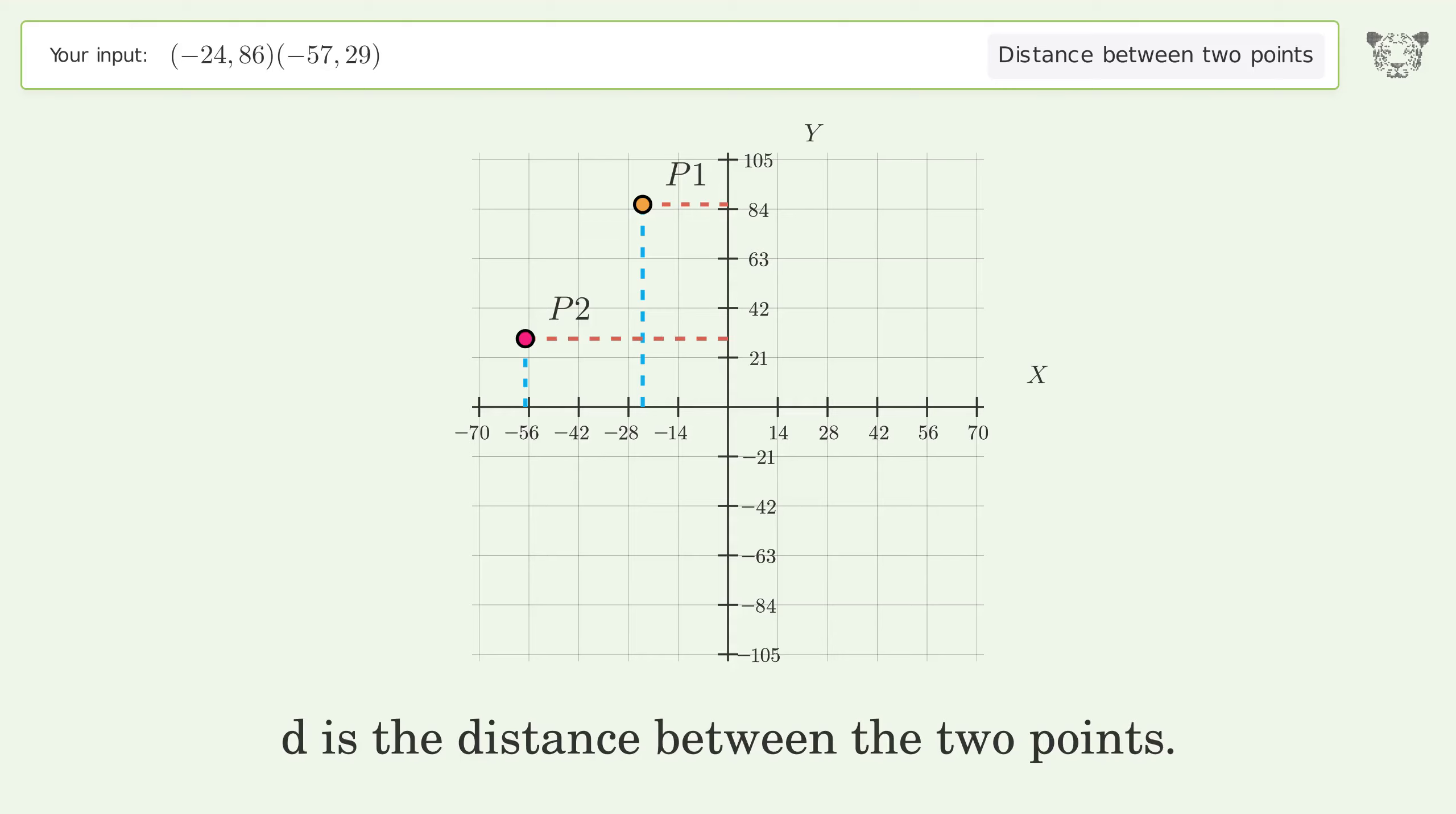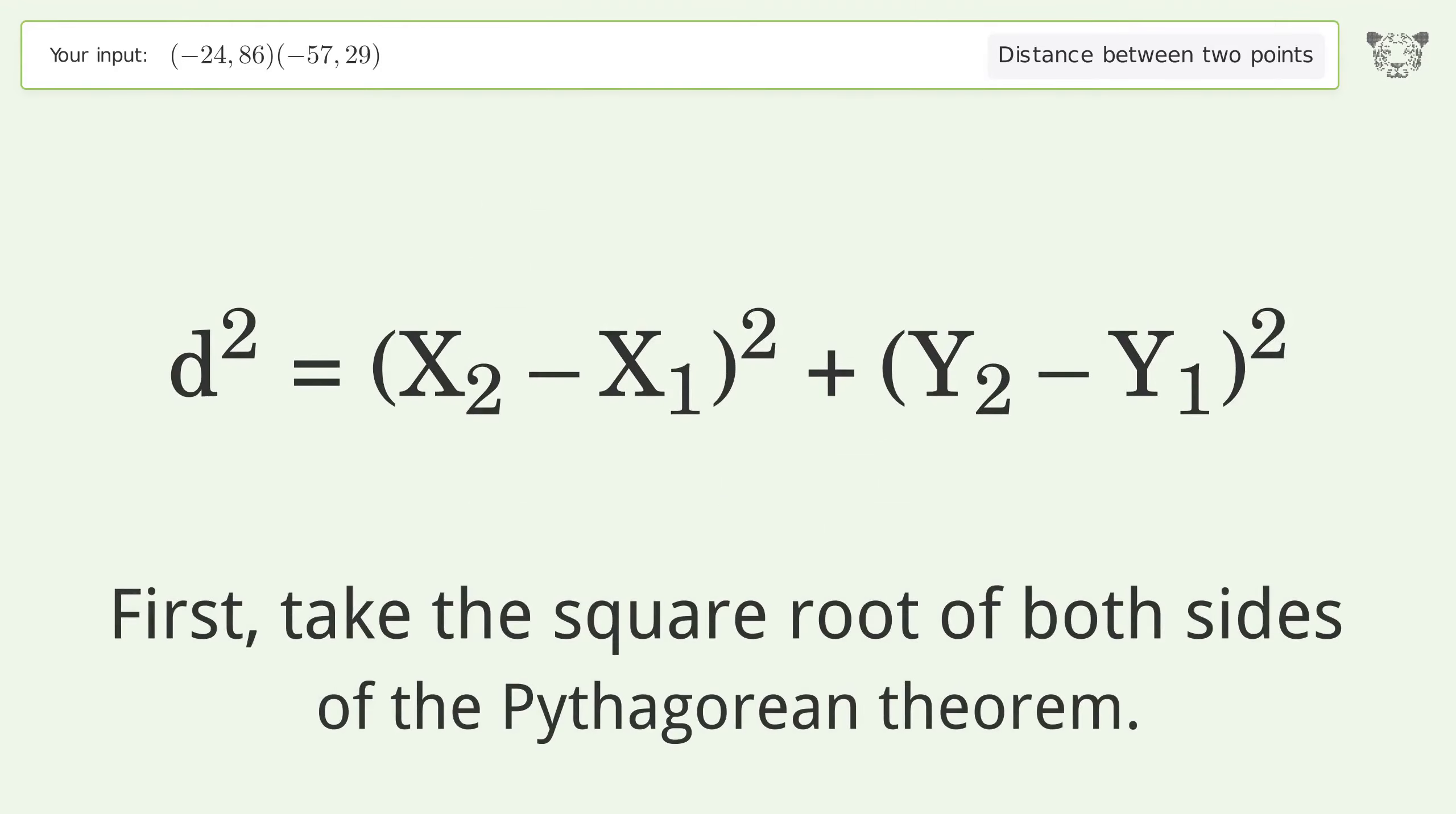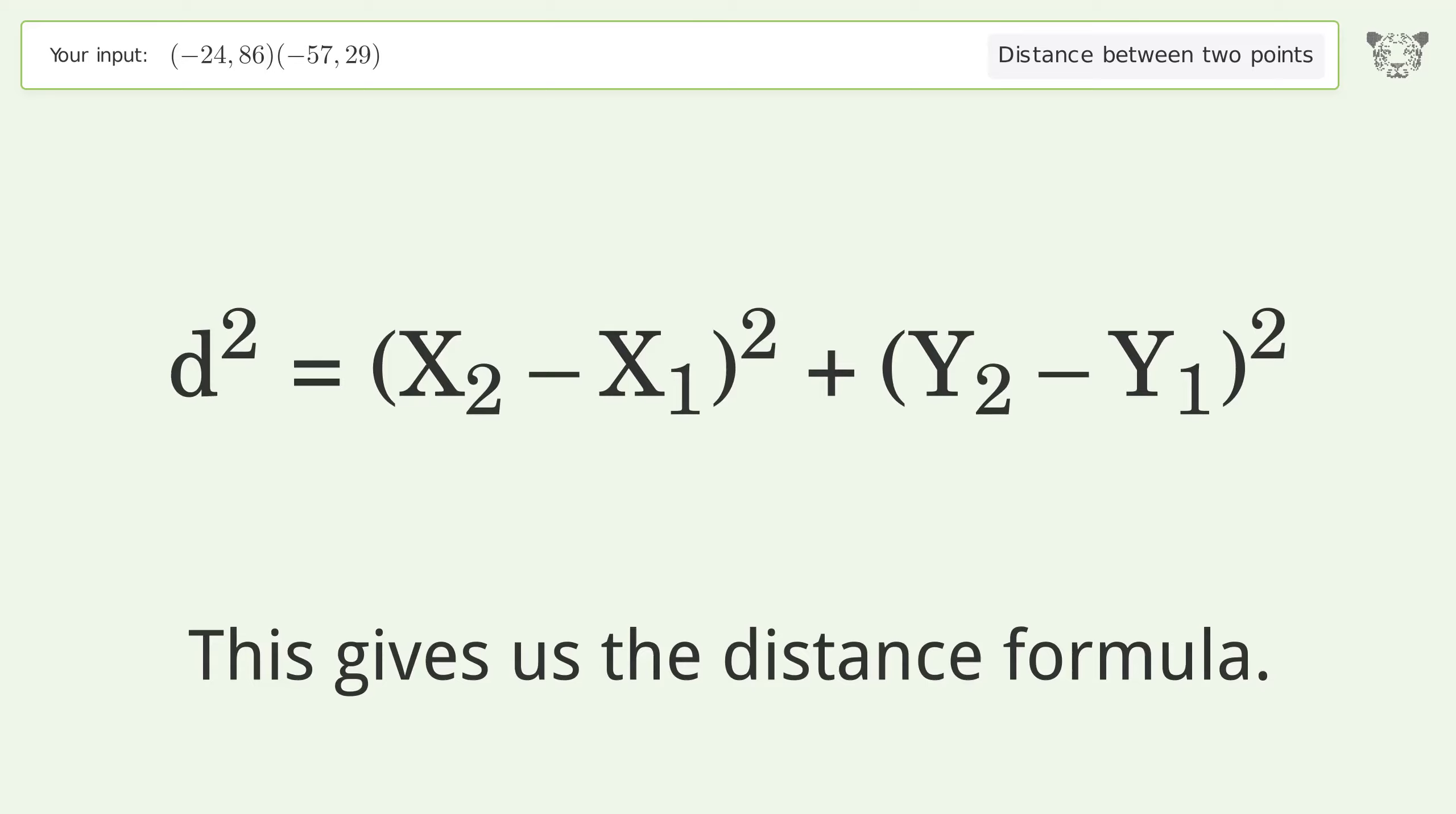d is the distance between the two points. First, take the square root of both sides of the Pythagorean theorem. This gives us the distance formula.